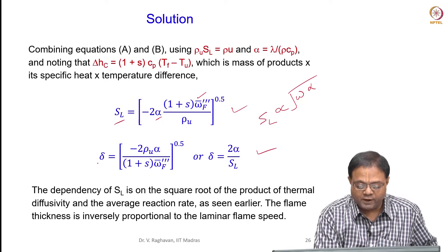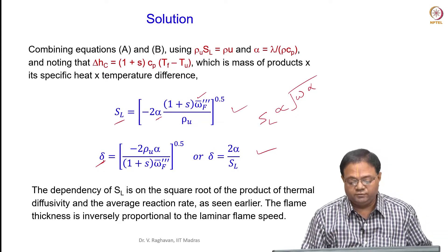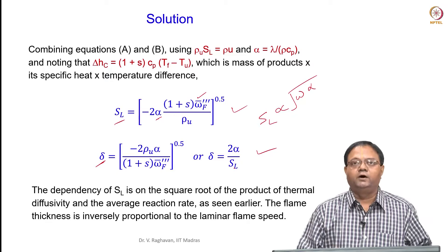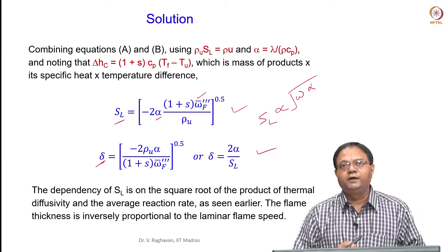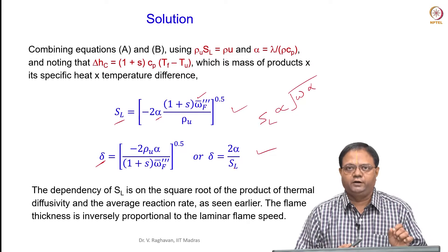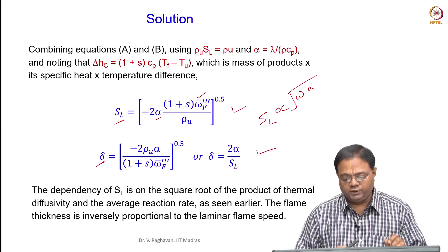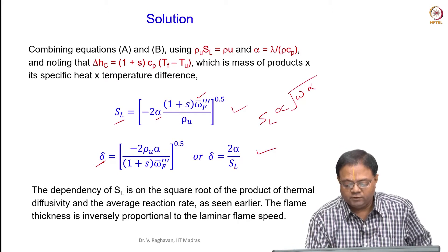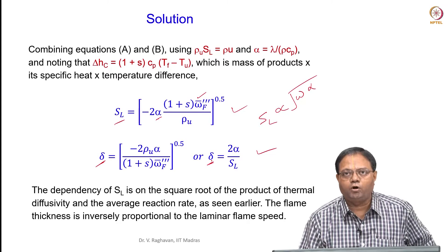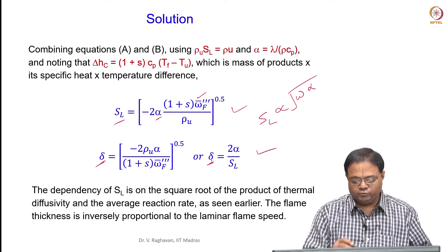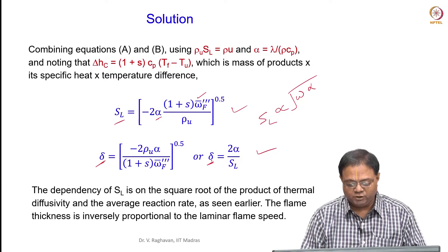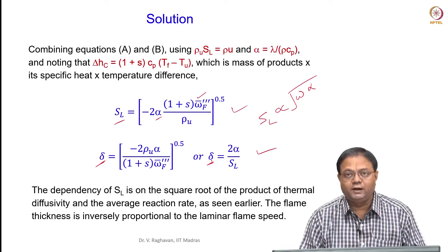If you take the flame thickness, flame thickness is inversely proportional to SL. So if the flame speed is very high, then the reaction will be completed within a very small regime — that small regime is called the flame thickness. Flame thickness is of the order of millimeters. This is the simplified theory based expression we got for SL and delta.